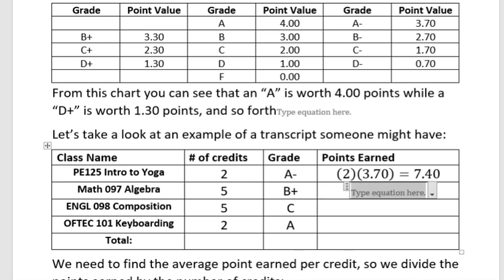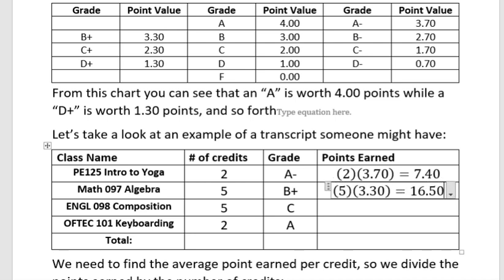I'm going to do the same thing for each class. The next one would be 5 credits and this one was a B plus. A B plus in my point scale — remember this is fictitious — was 3.30. So if I multiply 5 times 3.30 I get 16.50. Notice I'm going out to two digits because that's how GPA is calculated — it's always presented out to two places past the decimal point, or the hundredths place.